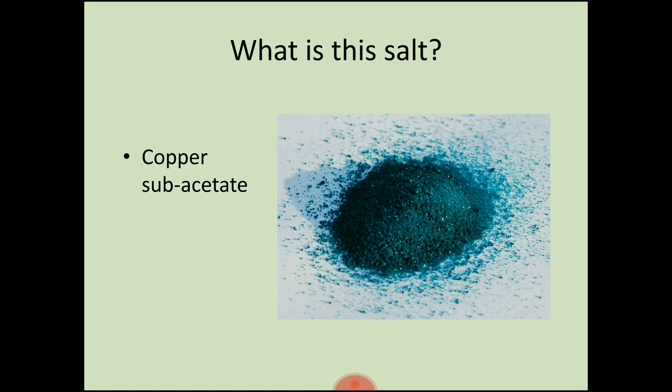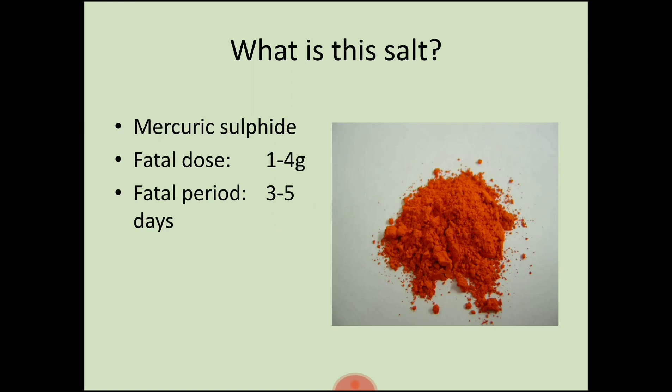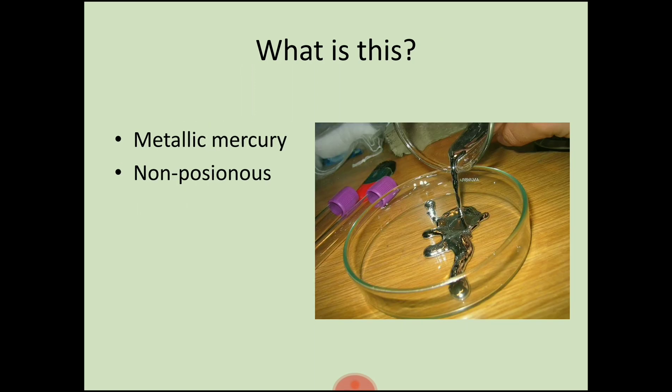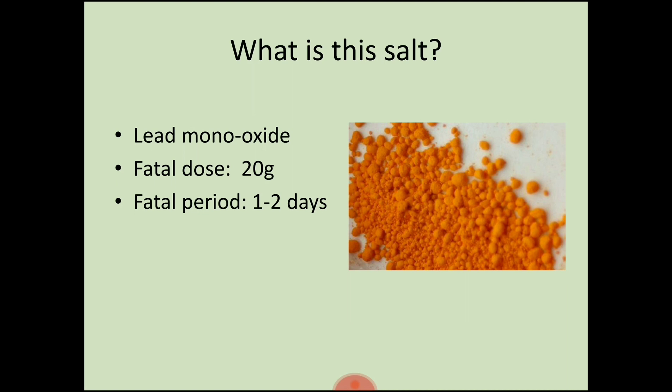Next is copper subacetate. Next salt is mercuric sulfate. The fatal dose of mercuric sulfate is 1 to 4 grams and the fatal period is 3 to 5 days. Next is metallic mercury, which is non-poisonous. Next is lead monoxide — fatal dose is 20 grams and fatal period is 1 to 2 days.